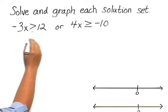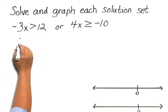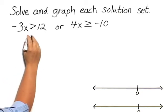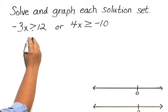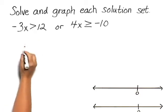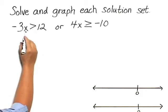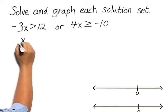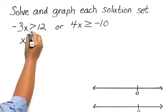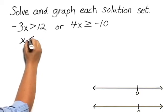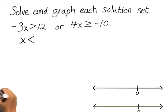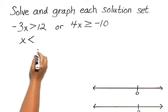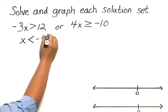Dividing both sides by negative 3, we will need to reverse the direction of the inequality symbol as we divide. So negative 3x divided by negative 3 would be x. Reversing the direction of the inequality, we have x is less than 12 divided by negative 3, which is negative 4.